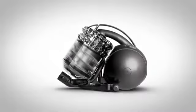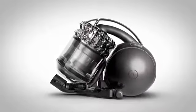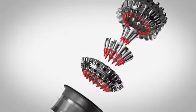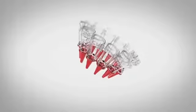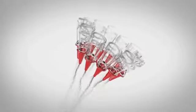High airflow is achieved by 54 small cyclones arranged on two levels. Each cyclone has a solid upper part and a flexible lower part, which oscillates at high frequency.